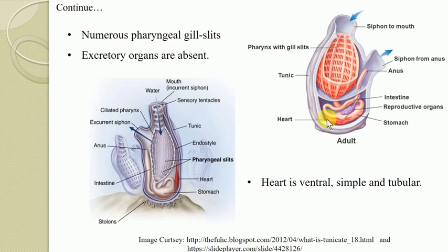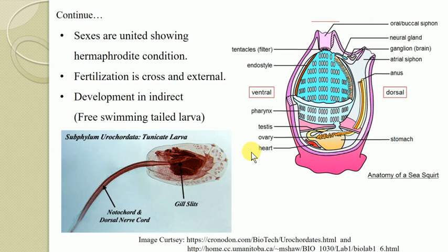Excretory organs are completely absent; definite excretory organs are completely lacking among Urochordate organisms. The heart is ventral, simple, and tubular — situated at the ventral side of the organism.